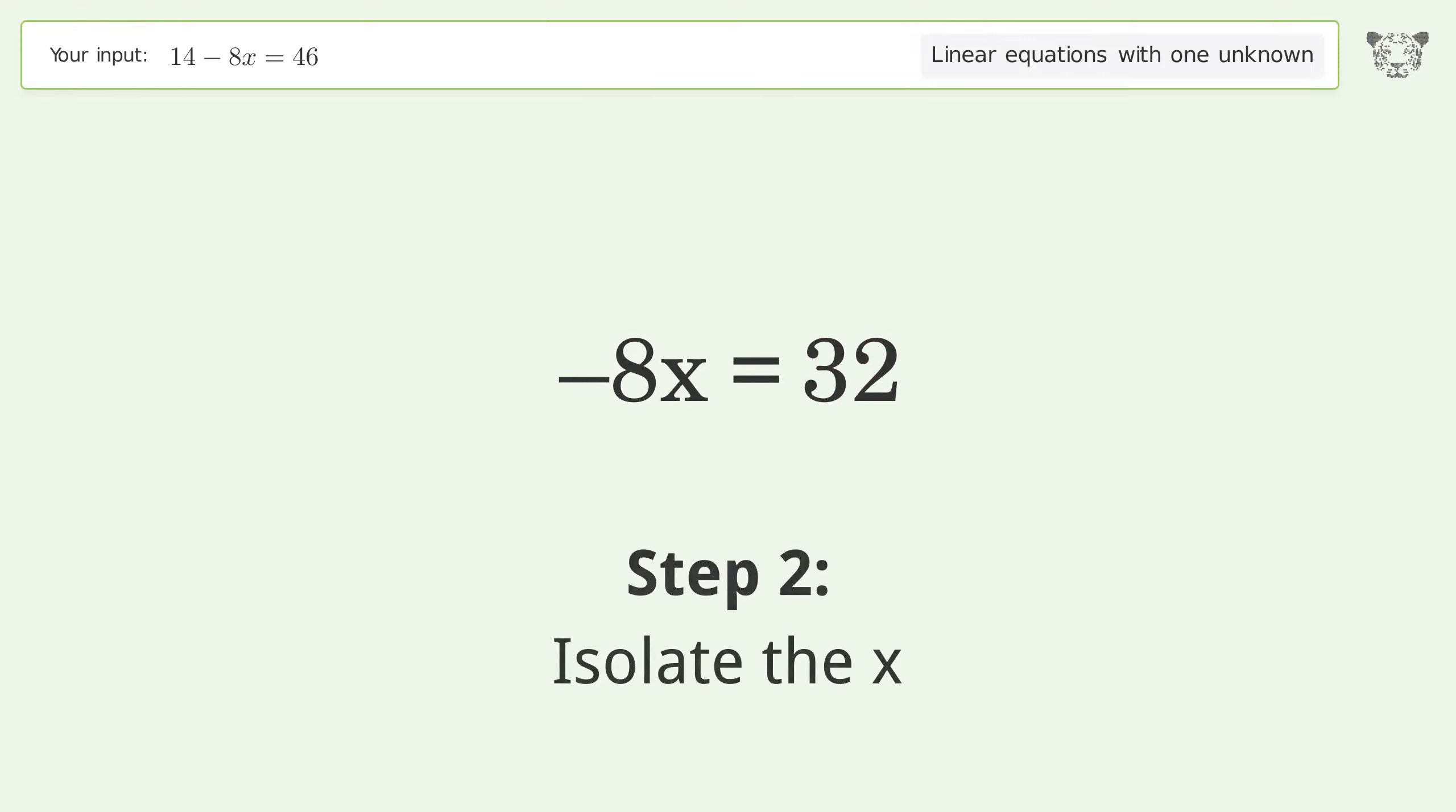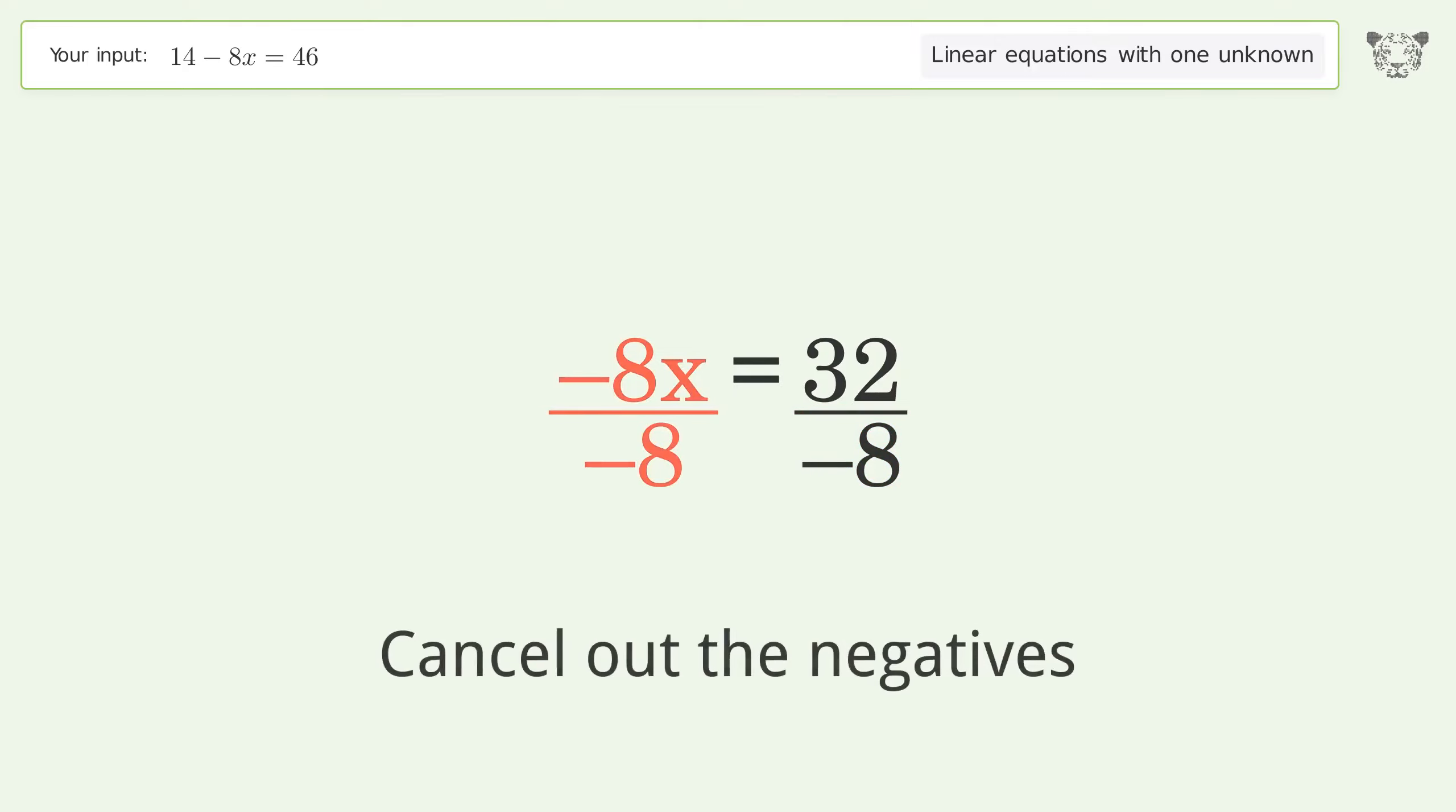Isolate the x. Divide both sides by negative 8. Cancel out the negatives.